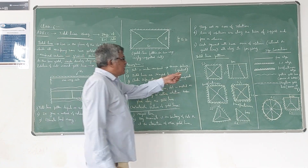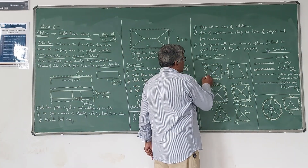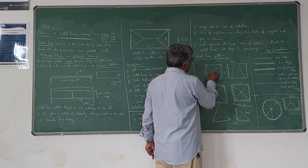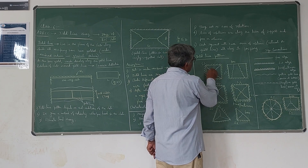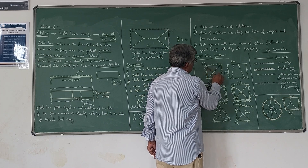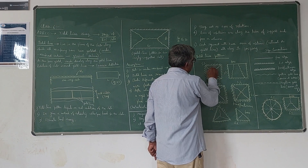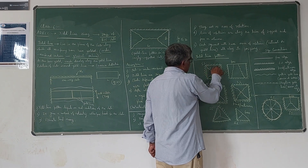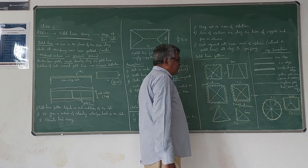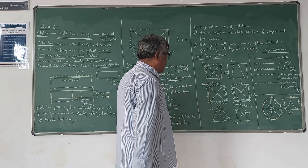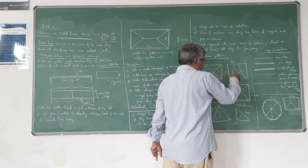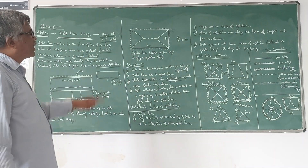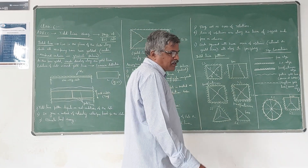For example, as shown in the diagram, these are the boundaries with four yield lines. Once a yield line touches another yield line, it terminates there. Similarly, yield lines can be seen terminating at the boundary in the figure. The third characteristic feature is that yield lines act as axes of rotation: when the collapse mechanism is reached, they act as axes about which the slab rotates.